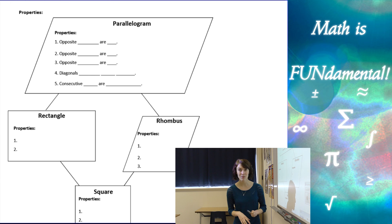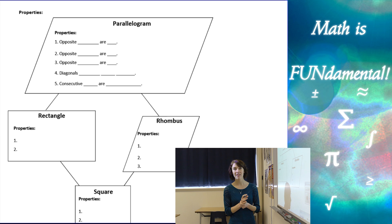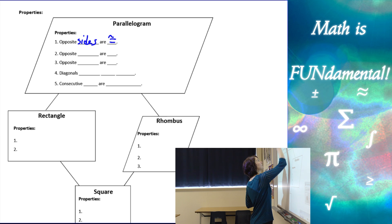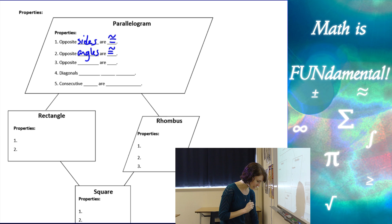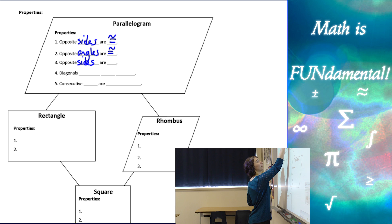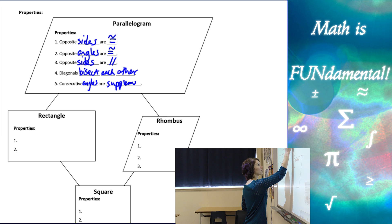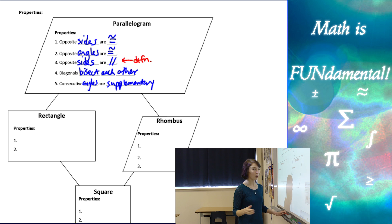Now let's review the properties of a parallelogram — you can see a more in-depth lesson in a previous video. The properties are: opposite sides are congruent, opposite angles are congruent, opposite sides are parallel (that's the definition), diagonals bisect each other, and consecutive angles are supplementary.